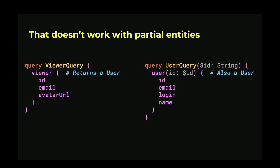For instance, you can have two queries that return the same entity but with different fields. With a relational database approach it's not clear how to handle this — you could treat them as two different entities, but that duplicates data in your cache. Or you could make all columns nullable, but then you can't differentiate when a field is actually null versus absent. So that approach doesn't really work.